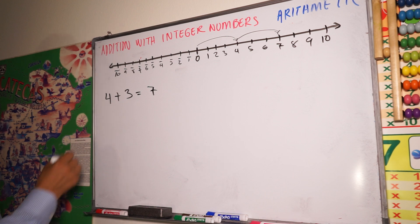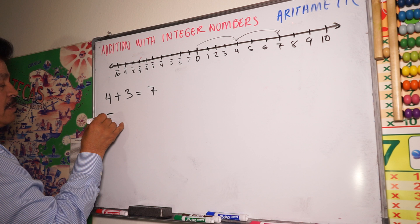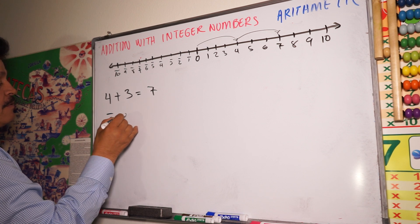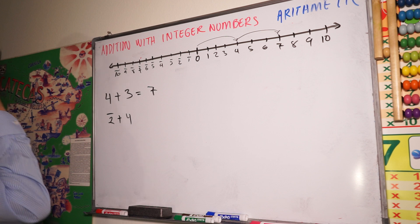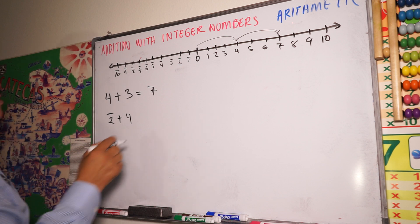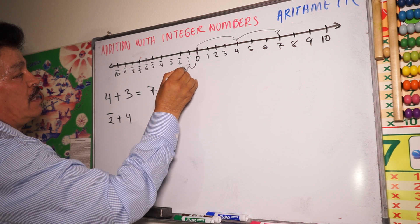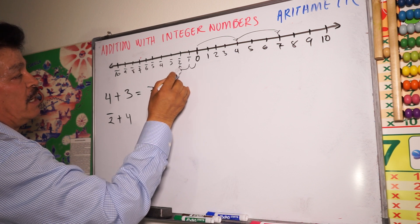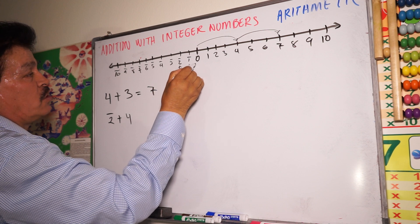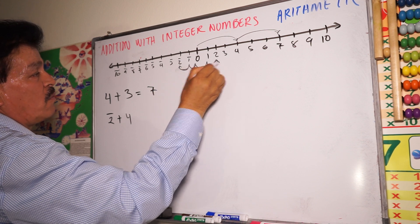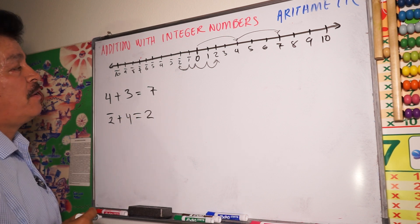You have minus two plus four. You go minus two to the left — one, two — and then plus four to the right — one, two, three, four. And it equals two, right?